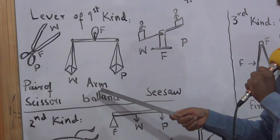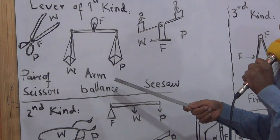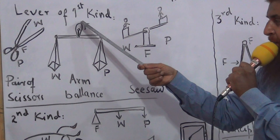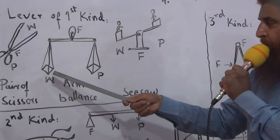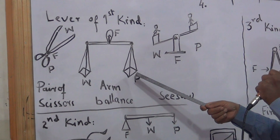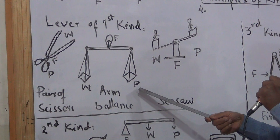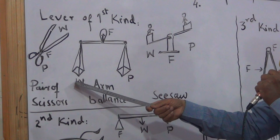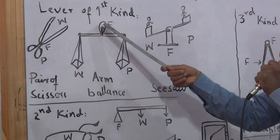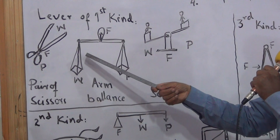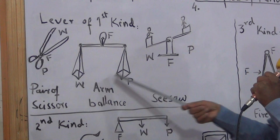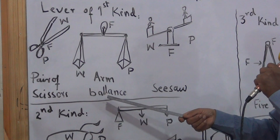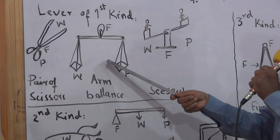The other example is arm balance or physical balance. Here you can use your hand — on one side you use your hand and on the other side you use your hand. The effort and load are used. If you move your hand you can balance it. The arm balance is the first kind of lever.